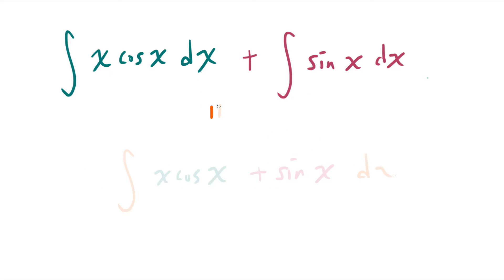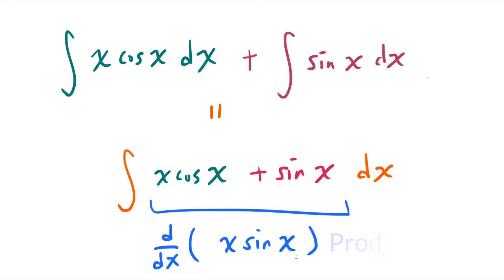And not only that, when I add up x times cosine of x plus sine of x, we know how to integrate this too, because that's the derivative of x times sine of x by the product rule.